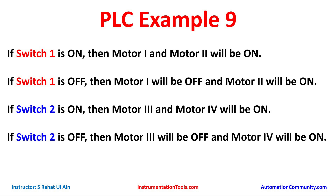For this example, for Switch 1 and Switch 2 we will use normally open contacts. For Motor 1 and Motor 3 we will use a simple coil, but for Motor 2 and Motor 4 we will use a set coil, because after turning off Switch 1, Motor 2 still remains on, and after turning off Switch 2, Motor 4 still remains on.